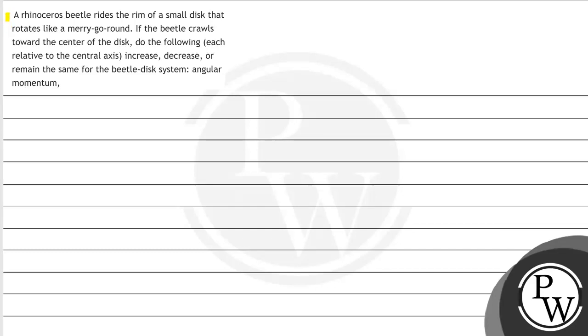Hello everyone, let's read the question. A rhinoceros beetle rides the rim of a small disk that rotates like a merry-go-round. If the beetle crawls toward the center of the disk, do the following each relative to the central axis increase, decrease, or remain the same for the beetle-disk system: angular momentum?